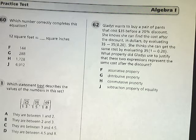Tennessee New Course Practice Test for Algebra 1, this is question number 60. Which number correctly completes the equation? 12 square feet equals blank square inches.